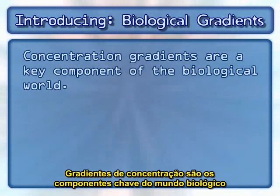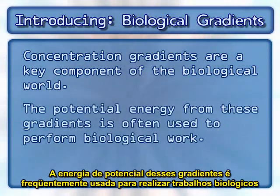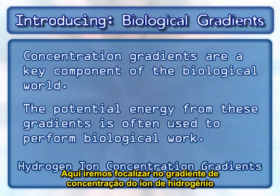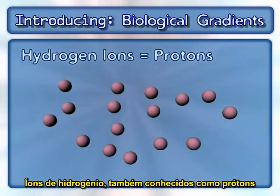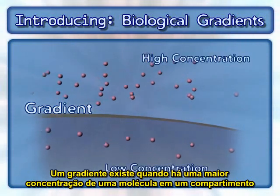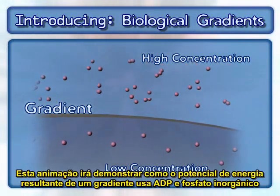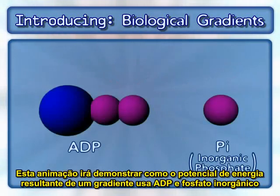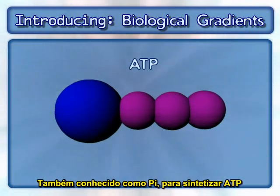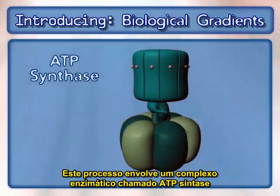Concentration gradients are a key component of the biological world. The potential energy from these gradients is often used to perform biological work. Here we will focus on hydrogen ion concentration gradients. Hydrogen ions are also known as protons. A gradient exists when there is a higher concentration of a molecule in one compartment compared to a neighboring compartment. This animation will demonstrate how the potential energy from a hydrogen ion gradient uses ADP and inorganic phosphate, also known as Pi, to synthesize ATP. This process involves an enzyme complex called ATP synthase.